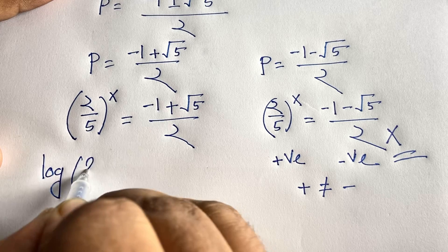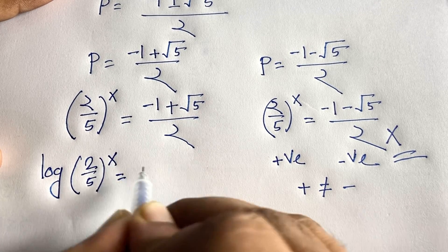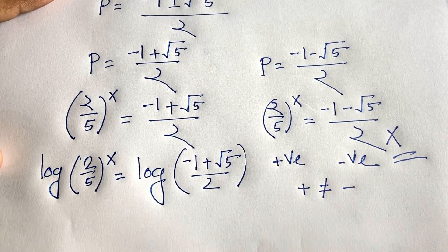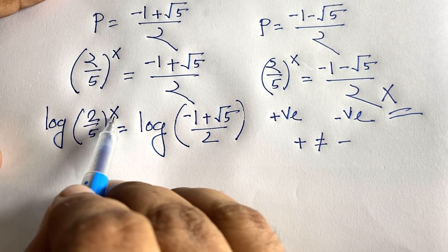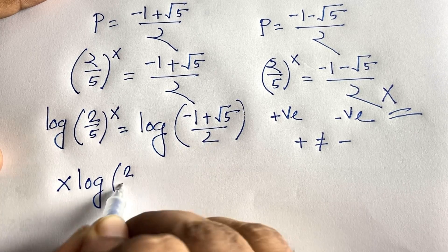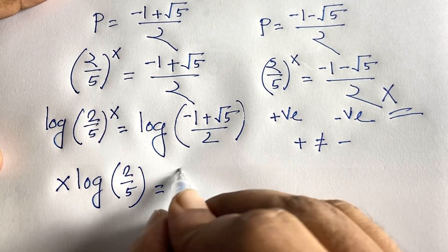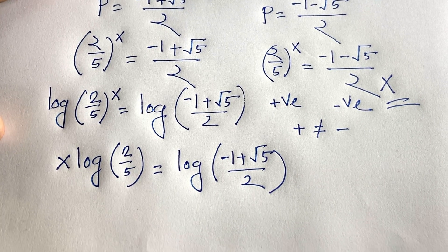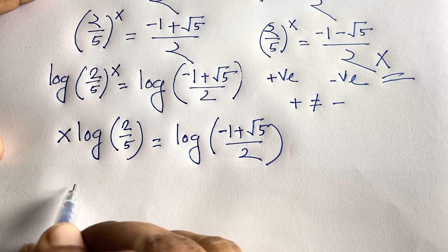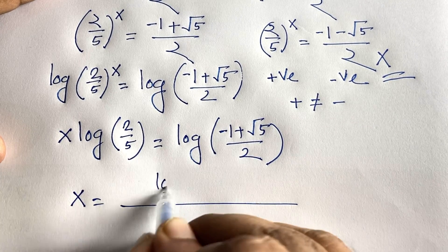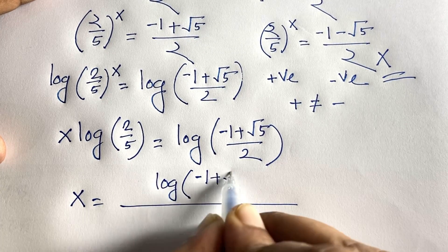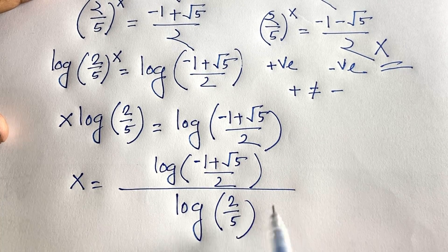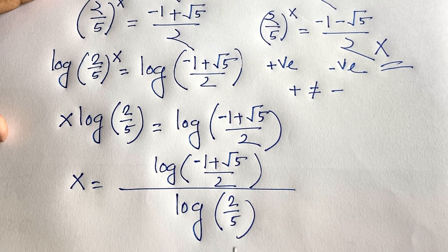To find x, we apply logarithm to both sides: log((2/5)^x) = log((-1 + √5)/2). By the logarithm power rule, the exponent comes down: x · log(2/5) = log((-1 + √5)/2). Dividing both sides by log(2/5), we get x = log((-1 + √5)/2) / log(2/5).